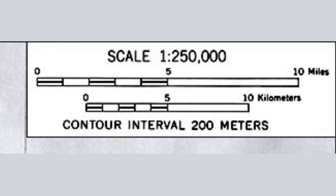A map's scale provides a ratio between distances on a map and actual distances on Earth. A map's scale of 1 to 250,000, for example, means that every centimeter on the map equals 250,000 centimeters, or 2.5 kilometers, on the ground.